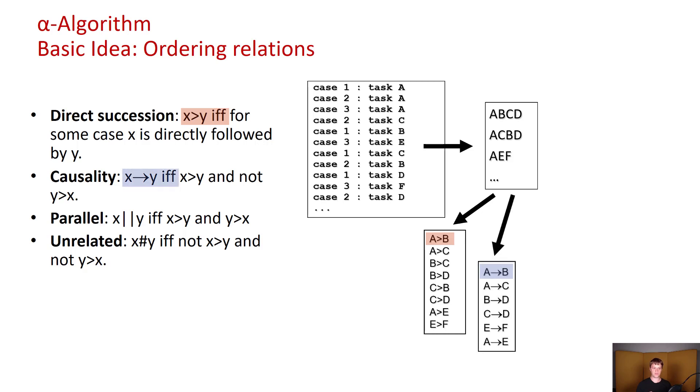However we can also say that there is causality between A and B because since there is one case where A is followed by B but there is no cases where B is immediately followed by A. We can also infer some parallel relations such as B occurs in parallel with C and vice versa of course. And some unrelated activities. For example A is unrelated to D and also A is unrelated to F because there is no direct succession relations between those activities.